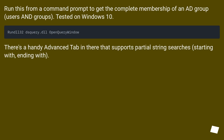Run this from a command prompt to get the complete membership of an AD group — users and groups. Tested on Windows 10. There's a handy advanced tab in there that supports partial string searches, starting with or ending with.